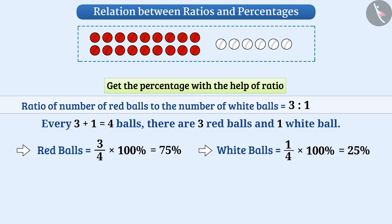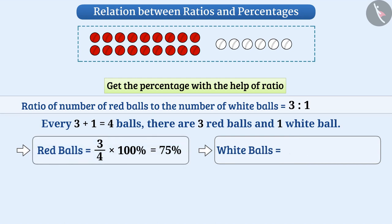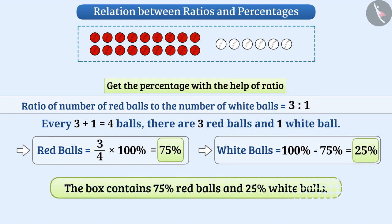Since the box contains 75 percent red balls, the box contains 100 percent minus 75 percent, equal to 25 percent white balls. In this way, we have obtained a percentage from ratio — in the box there are 75 percent red balls and 25 percent white balls.